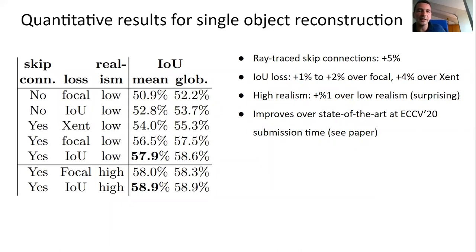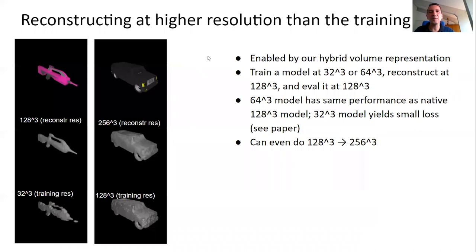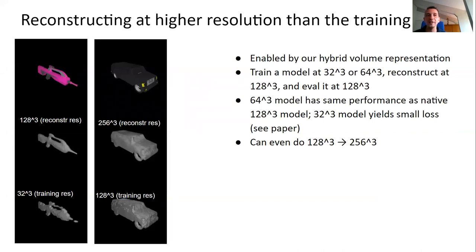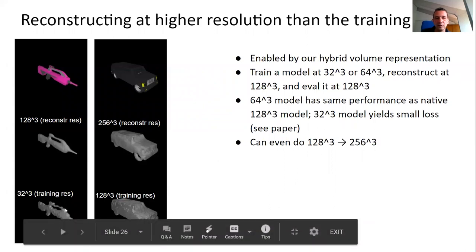At time of submission this was state-of-the-art, though we have been overtaken at CVPR since. We also demonstrate reconstruction at higher resolution than training resolution, enabled by our hybrid volume representation. Training at 32-cube and 64-cube, then reconstructing at 128-cube: the 64-cube model loses no performance, and the 32-cube model loses just a couple percent. We can even go to 256-cube resolution — you can see a water gun that's all broken up at 32-cube becomes much sharper at 128-cube, especially fine details.